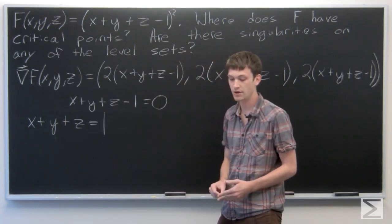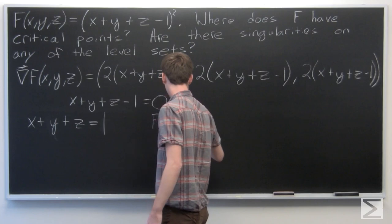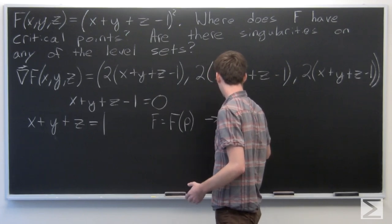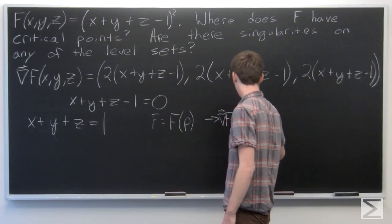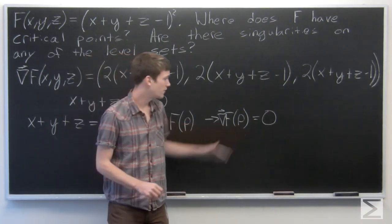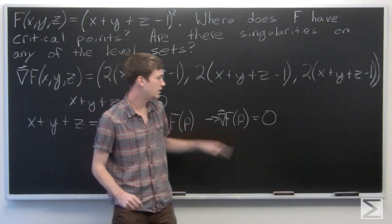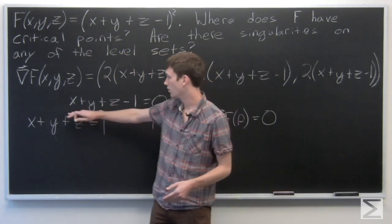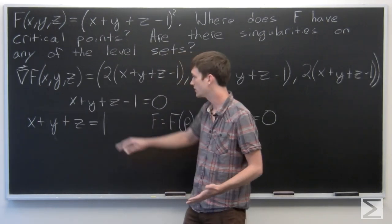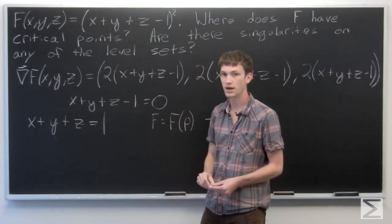We know that if p is a singularity on the level set f equals f(p), then the gradient vector of f at p is 0. Supposing that p is a singularity, we want to find if there are any singularities on any level sets. If the gradient vector of f at p is 0, then we're on this plane, because all critical points occur when the gradient vector equals 0. So if a point is on this plane, that is the only time we could possibly have a singularity.